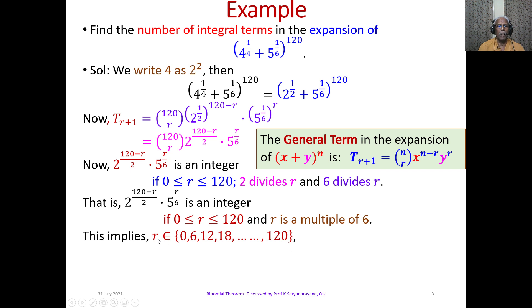So r belongs to the set consisting of 0, 6, 12, 18 up to 120, which will be 20 terms, and 0 is the first term. The total will be 21 terms. So r takes 21 values.